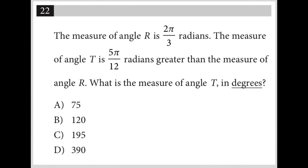This question says the measure of angle R is 2π/3 radians. I like to actually call that 2/3π because that's the same exact thing. So angle R equals 2/3π radians. The measure of angle T is 5π/12, right? So angle T equals 5/12π radians greater than the measure of angle R.